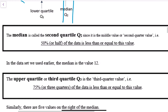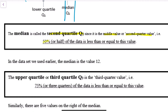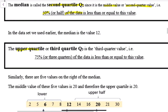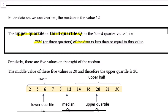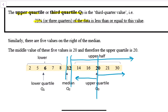The middle value of the left five values is six, so the lower quartile Q1 is six — splitting the half into half, which is what 'quartile' means. The median is called the second quartile Q2, meaning it is the middle value at fifty percent of the data — in our example Q2 is 12. The upper quartile, or third quartile Q3, represents 75 percent of the data. Similarly dividing the upper half, the middle value is 20, so the upper quartile Q3 is 20.